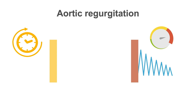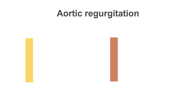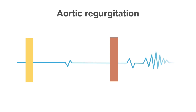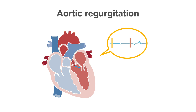When severe enough, the murmur may be accompanied by a late diastolic rumbling murmur, the Austin-Flint murmur. It is caused by a heavy jet of aortic regurgitation impinging on the anterior leaflet of the mitral valve, causing narrowing of the valve.